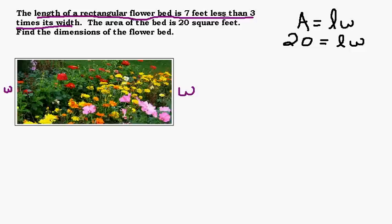So we know the length is 7 feet less than 3 times the width. So if we took 3 times the width, it's 7 less than that. Can you think of how you would write that? 3 times the width, 3 times the width, and then 7 less than that. So we got 3 times the width, and 7 less than that.